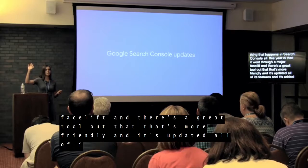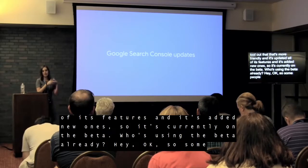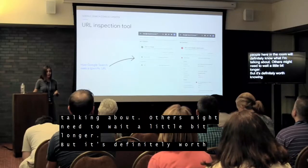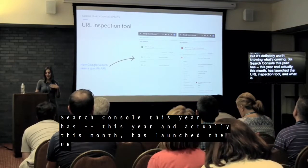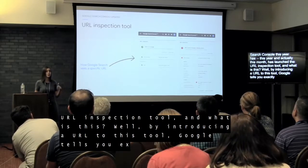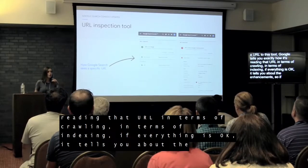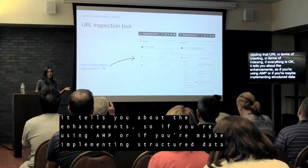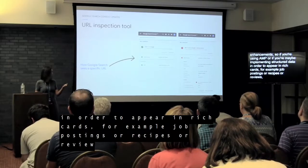Search Console has launched the URL Inspection Tool. By entering a URL, Google tells you exactly how it's reading that URL in terms of crawling and indexing. If everything is okay, it tells you about enhancements — for example, if you're using AMP or implementing structured data for rich cards like job postings, recipes, or reviews. If there are any problems, it tells you what they are and how to fix them. It's a fantastic tool offering transparency and full control of your site.